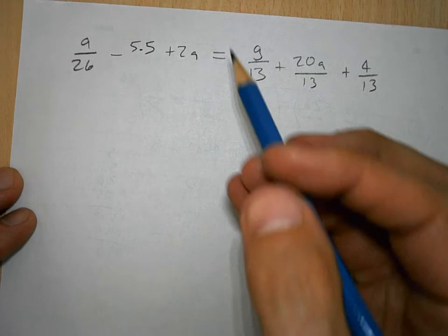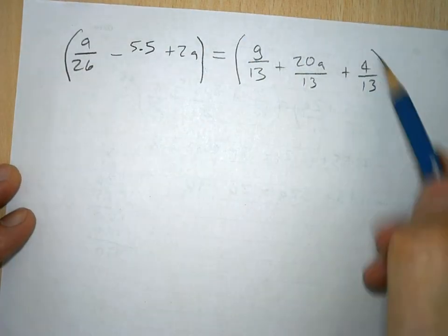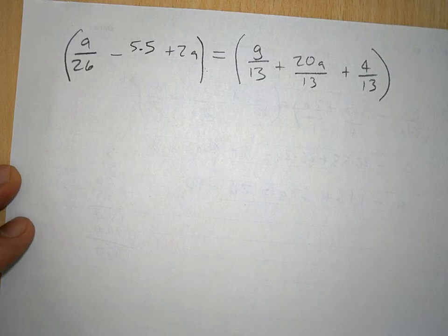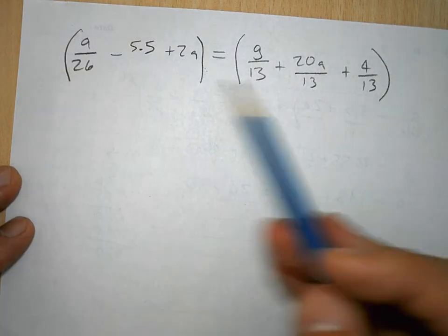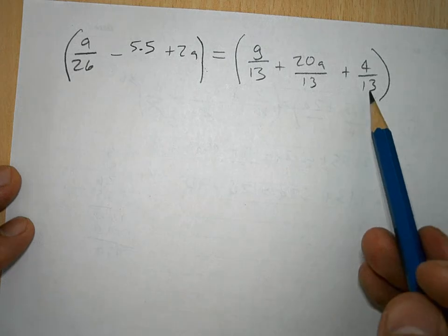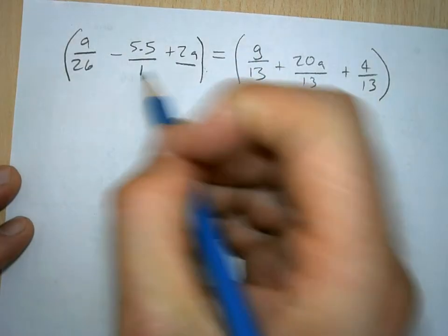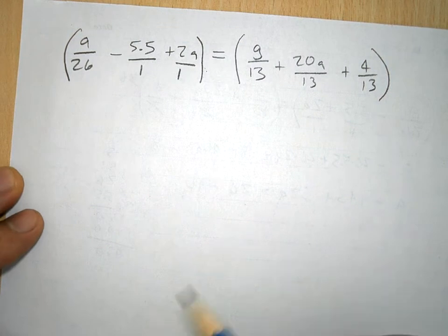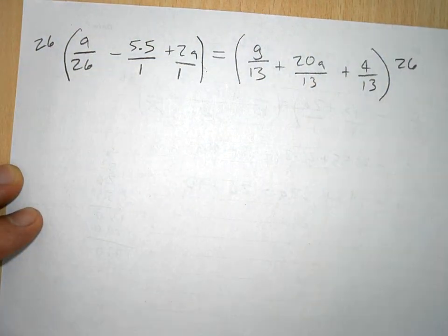So, the first thing that we're going to do to get rid of this is to multiply by the lowest common multiples of the denominators. The denominators disappear. In this case, we have the denominator over here of 26, and over here of 13. So, I'm just going to turn these into fractions for the sake of ease, and I'm going to multiply this side by 26 and this side by 26 so that it is balanced.